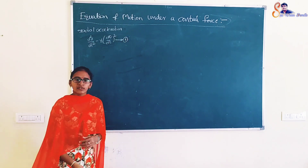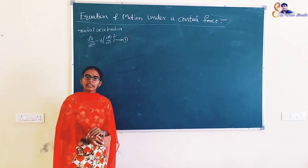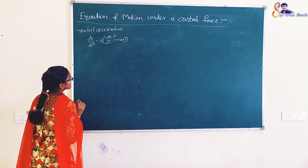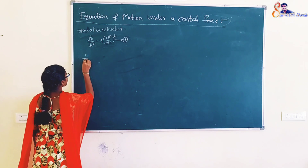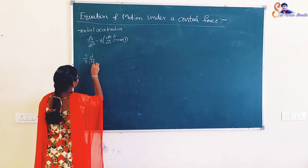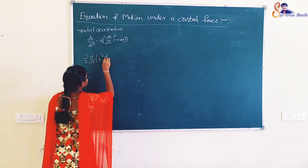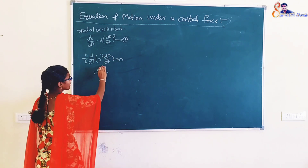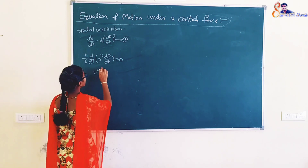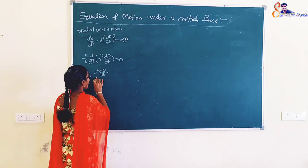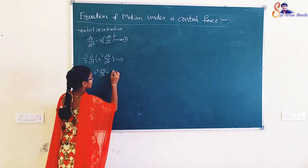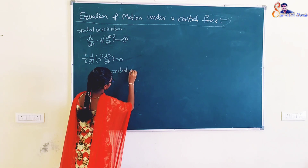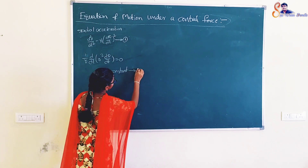In the case of central force, there is no force acting on the particle perpendicular to R. That is, the transverse acceleration is 0. So the transverse acceleration is: (1/R) · d/dt(R² · dθ/dt) = 0. This is considered as equation 2.